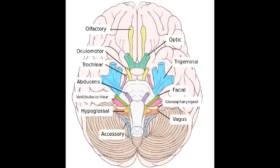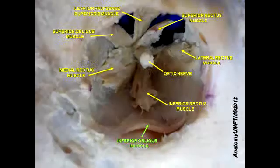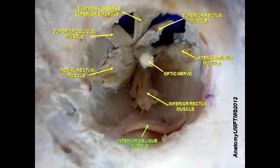What is the name of cranial nerve 3? Cranial nerve 3 is the oculomotor nerve. Its function is for eye movement, since it innervates the superior rectus, inferior rectus, medial rectus, and inferior oblique muscles.